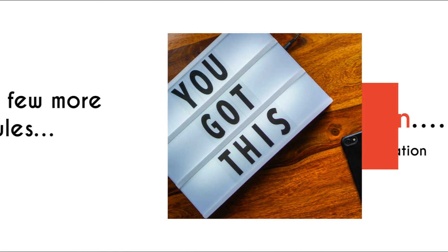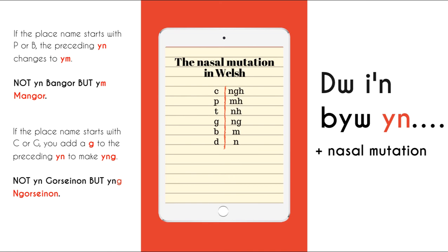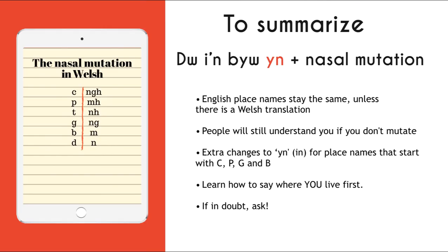Just a few more rules to be aware of. As well as the changes to the beginning of the place name, we also have to be aware of the changes to yn. If the place name starts with P or B, the preceding yn changes — not yn Bangor, but ym Mangor. Notice how much easier it is to say ym Mangor than yn Bangor. If the place name starts with C or G, you add a G to the preceding yn to make yng. We've already seen the changes for C words like Caerdydd, but not for places starting with G — like Gorseinon. So you wouldn't say yn Gorseinon, but yng Ngorseinon. Notice how much easier it is to say yng Ngorseinon than yn Gorseinon.